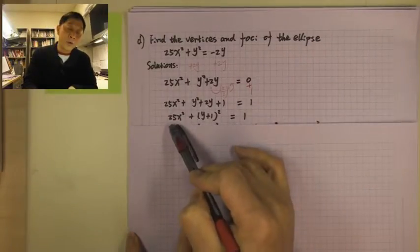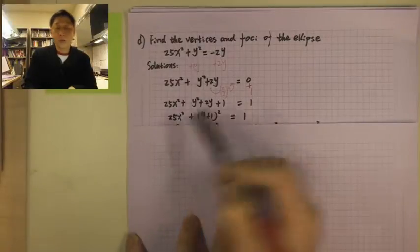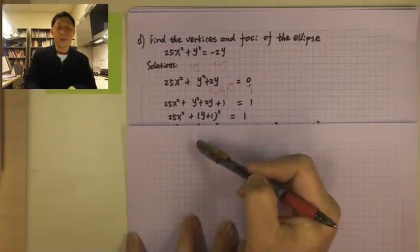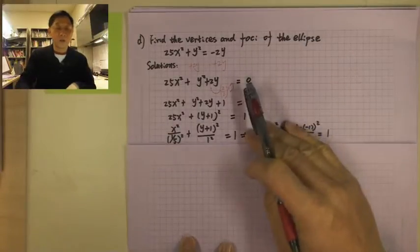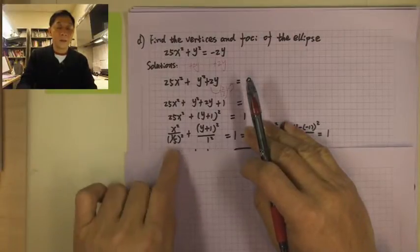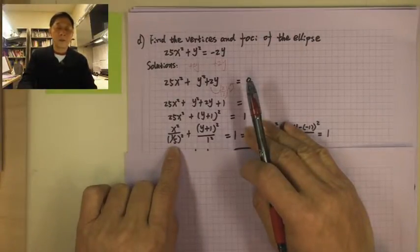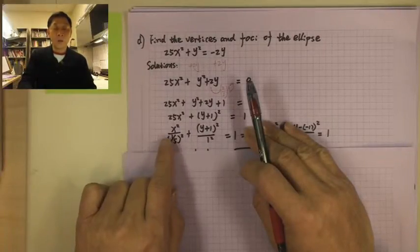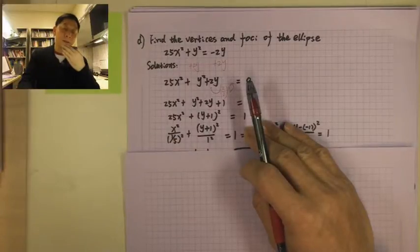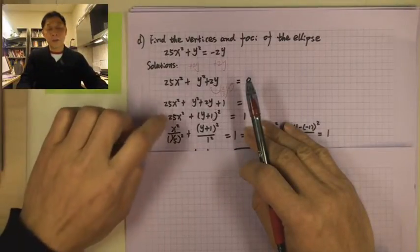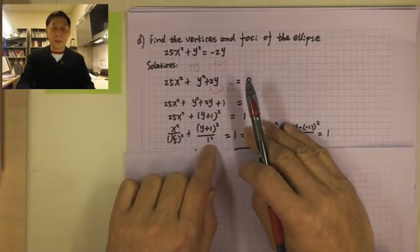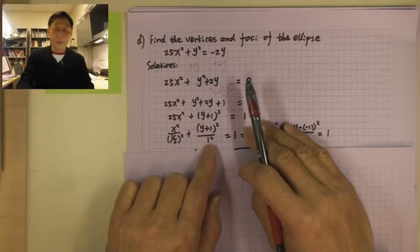Now, right-hand side is 1 — that's the standard form. On the left-hand side, we handle the 25x squared by flipping 25 down to the denominator. So it becomes x squared over (1/5) squared, because 1/5 squared is 1/25. And (y + 1) squared has 1 squared in the denominator, since 1 squared is 1.